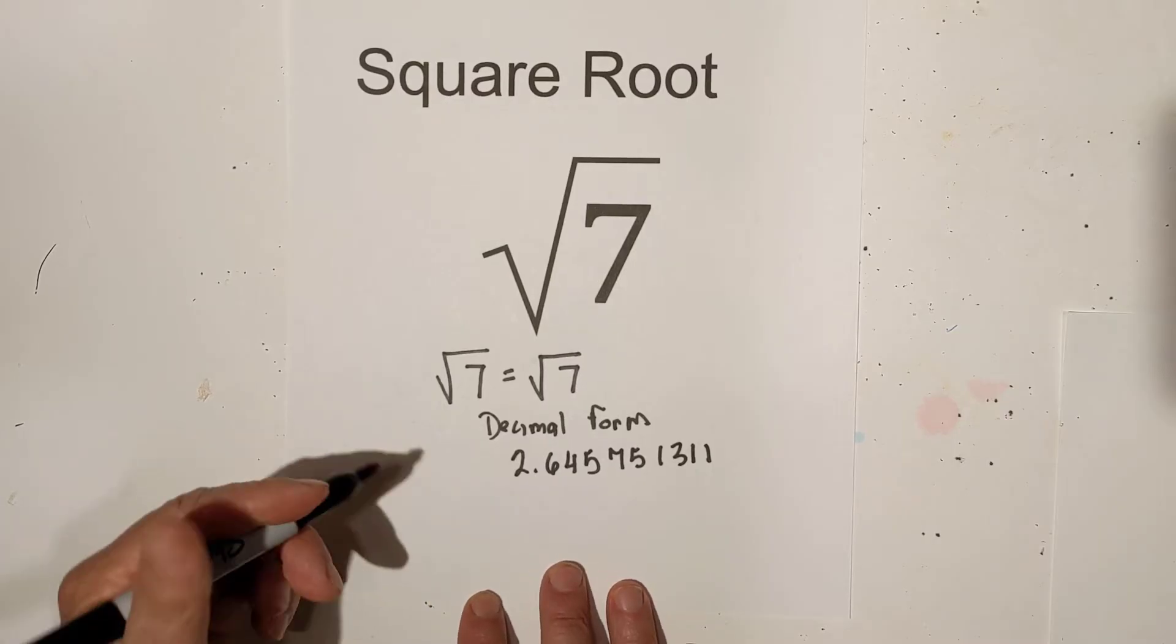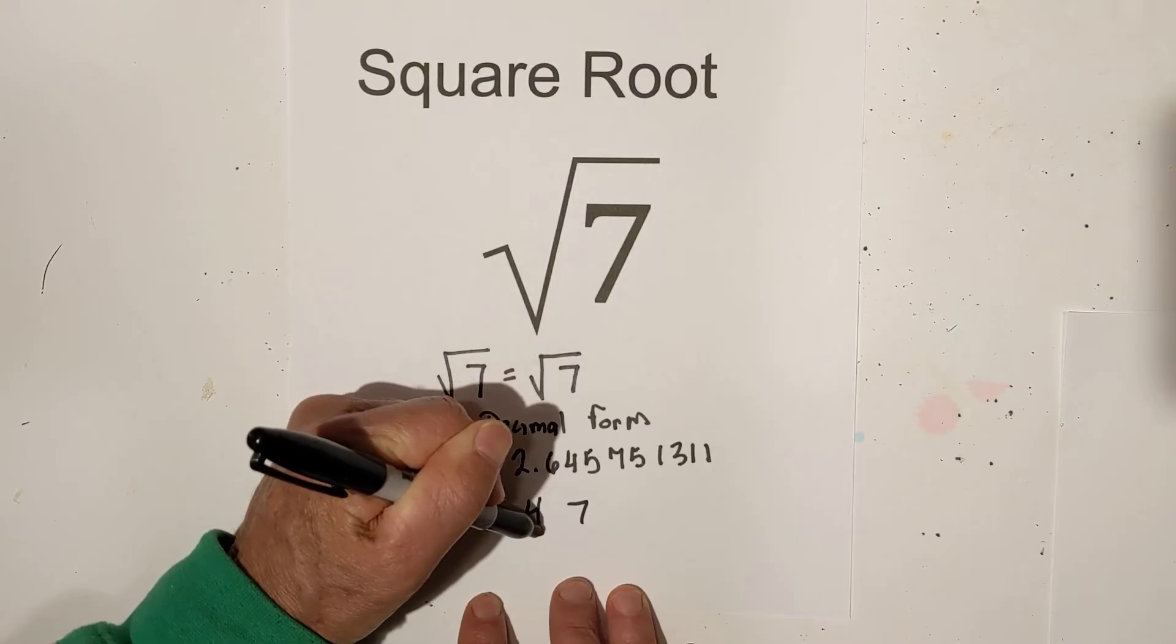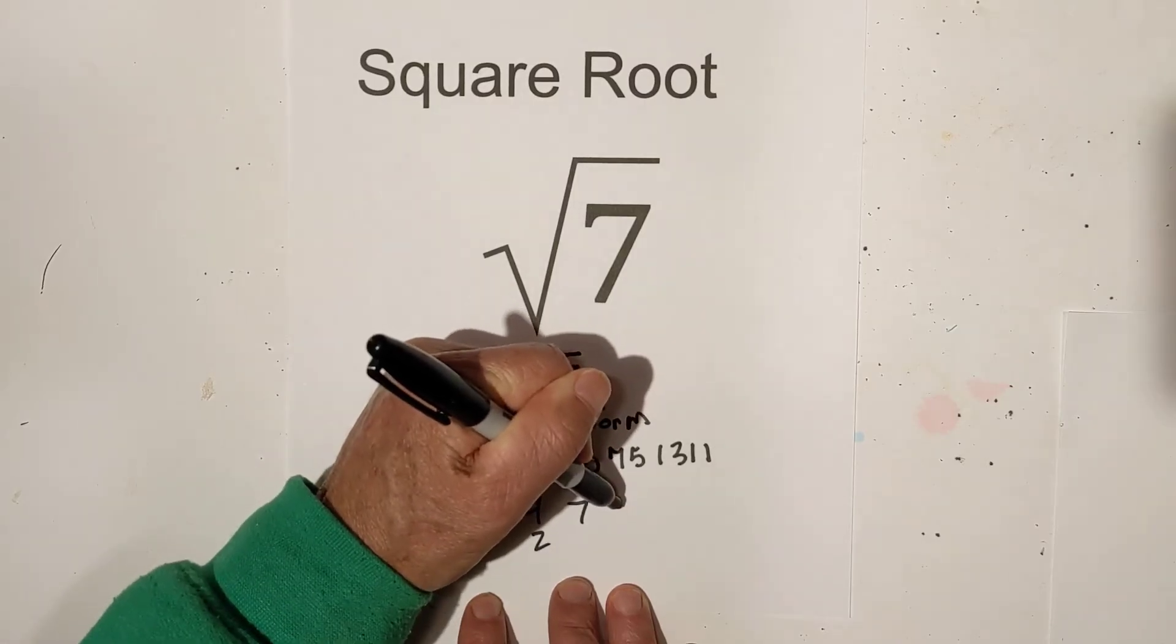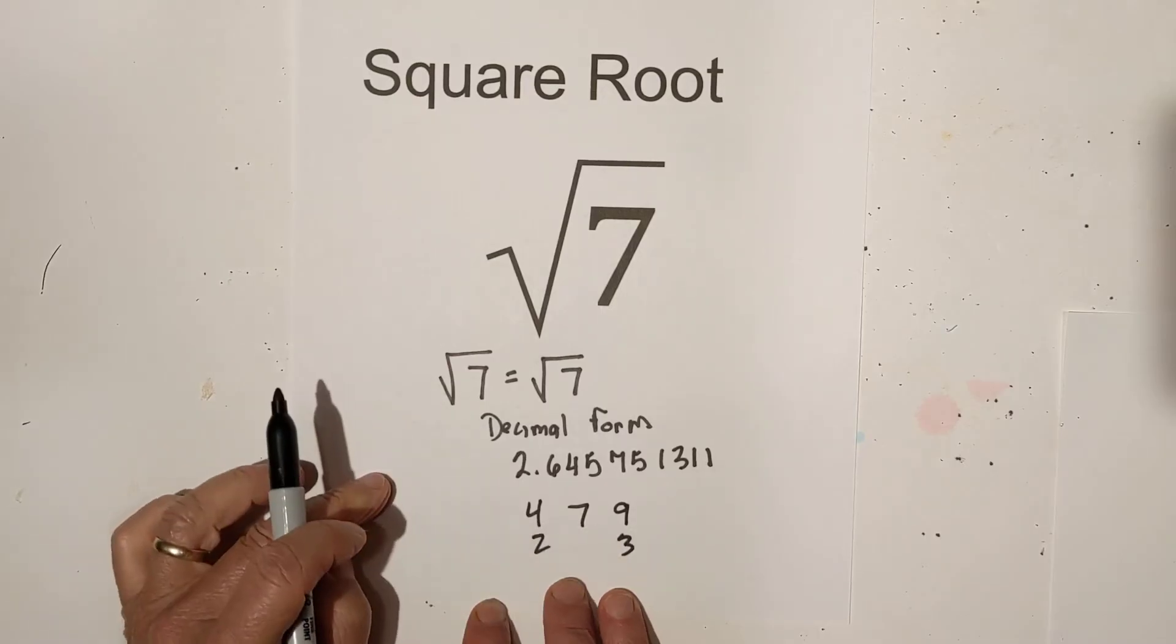One way to estimate it is you have the square root of 4, which is 2 on one side, and the square root of 9 on the other side, which is 3, so it's going to be somewhere between 2 and 3.